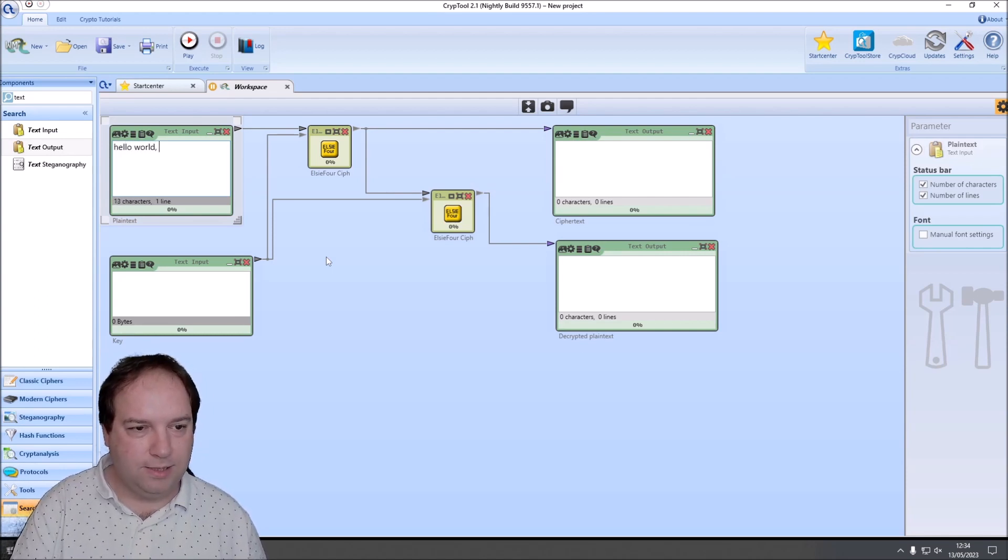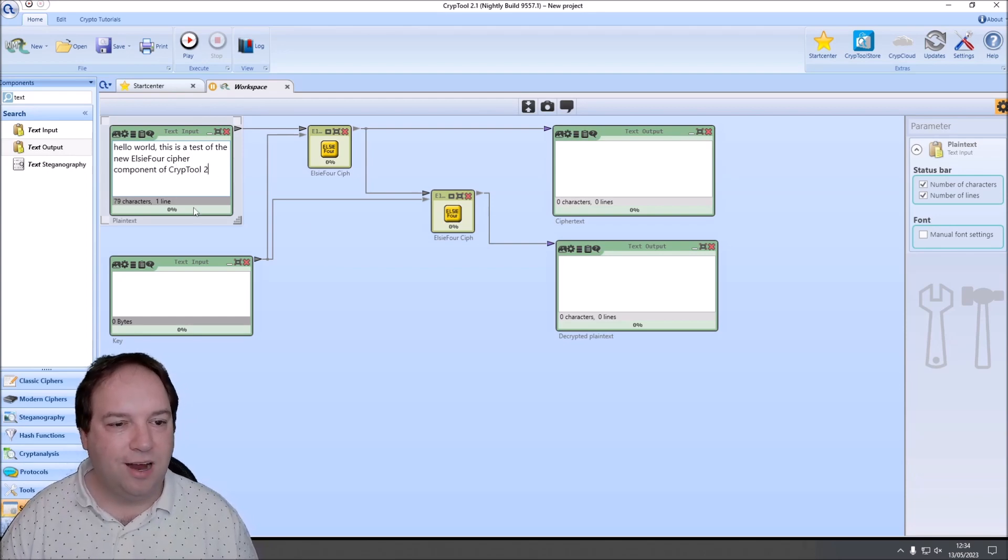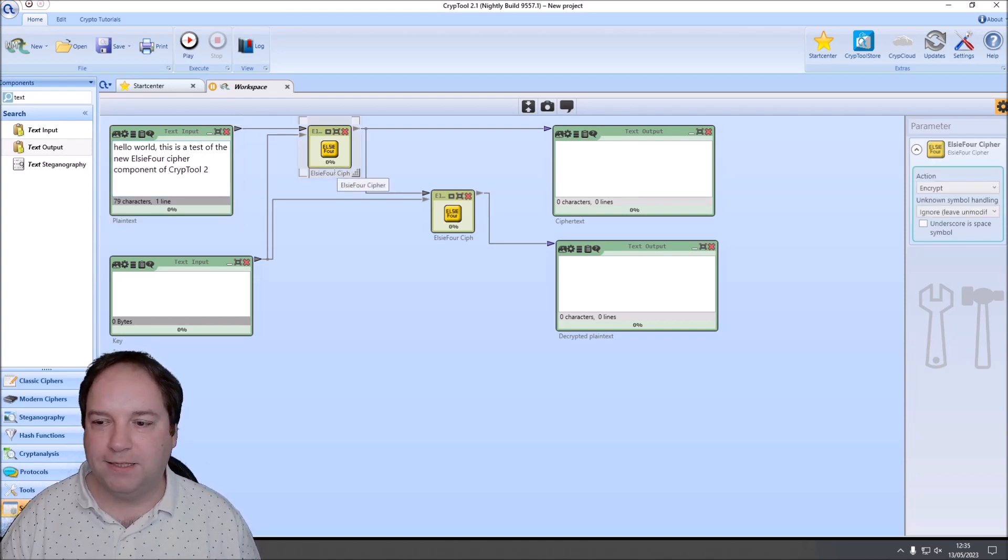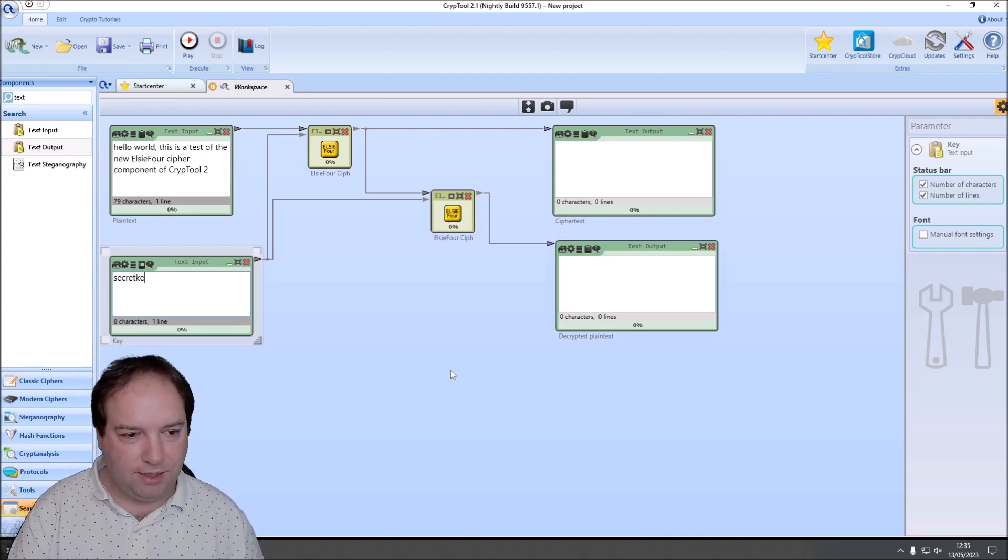Now we need some test messages or one test message. Hello world. This is a test of the new LC4 cipher component of CrypTool 2. And since our alphabet that LC4 uses has digits, we can use digits in our plain text. And also we can use the spaces, since internally it will replace the spaces for underscores. Then we need a key. We use secret keyword.